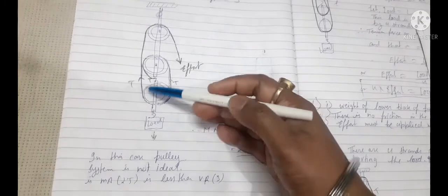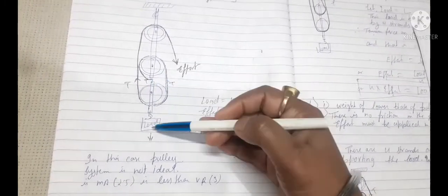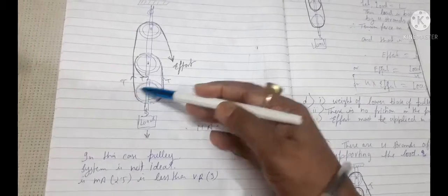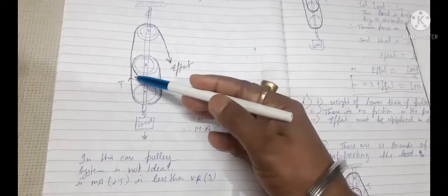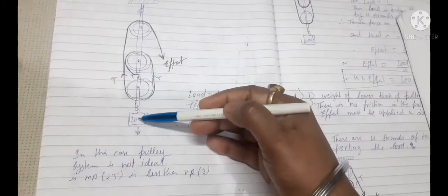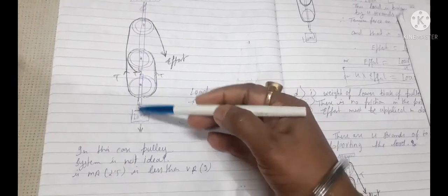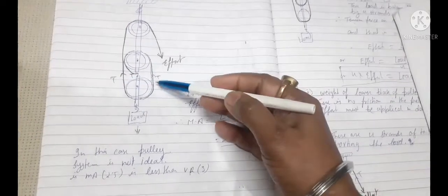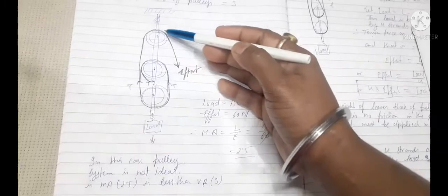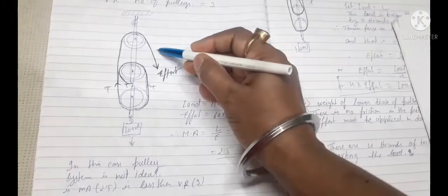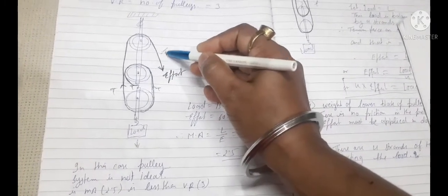How many parts of the rope is handling it? See, one, two, and three. These three strengths are handling or lifting up this load, so it is divided into three equal parts as tension parts, and this tension force equals to the effort because this side also tension force is working and that is effort to lift the body.